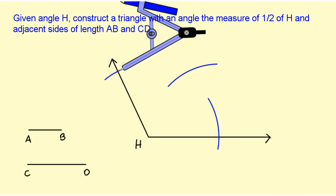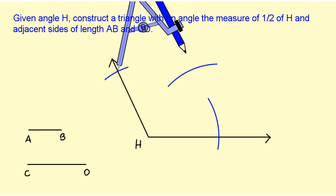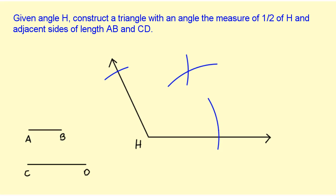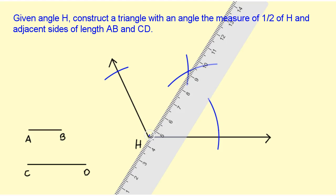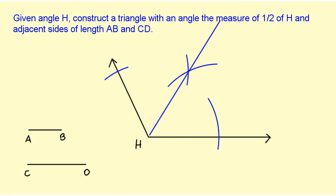After I've done that, I just need to draw my line segment or ray to give me the bisector. So now I have this angle right here that's half the measure of angle H — that's the angle I'm going to use for my triangle.